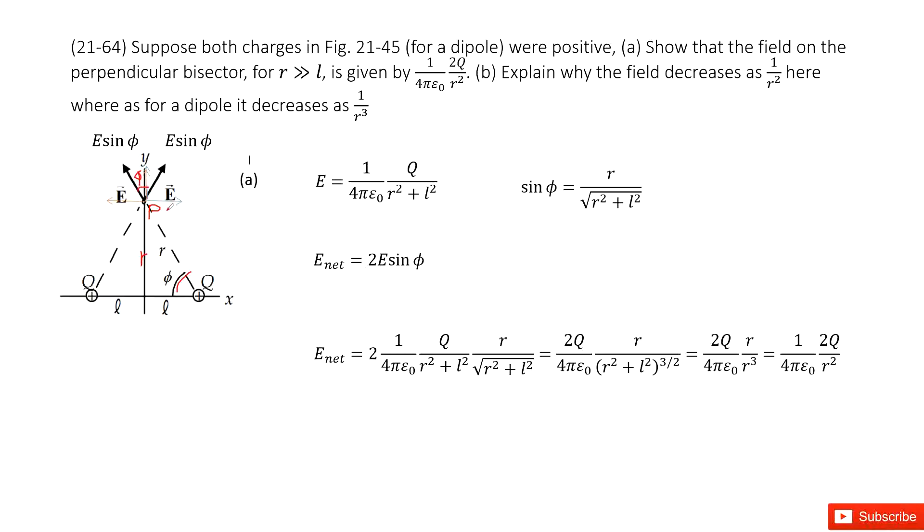Now we can write down the magnitude for these electric vectors: 1 over 4π epsilon naught—this is a constant—times the charge Q, divided by the distance from the charge to the location.